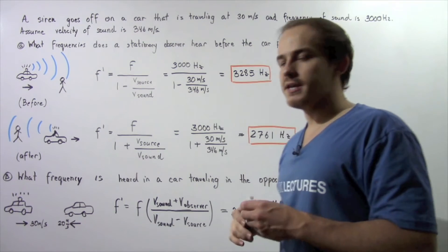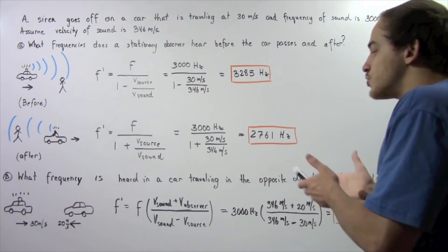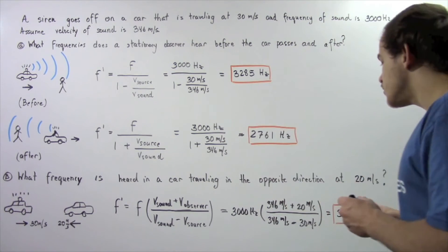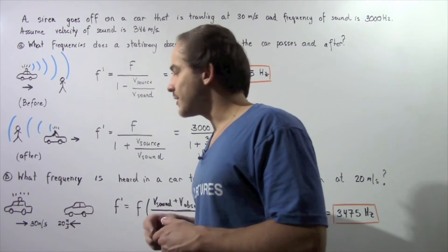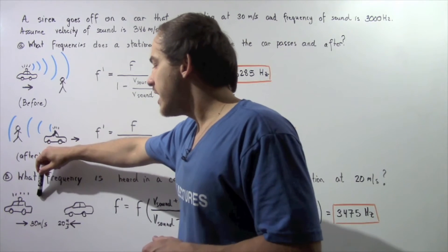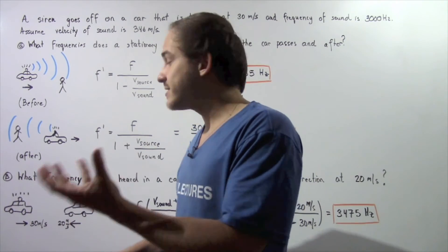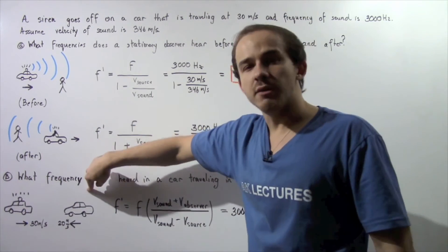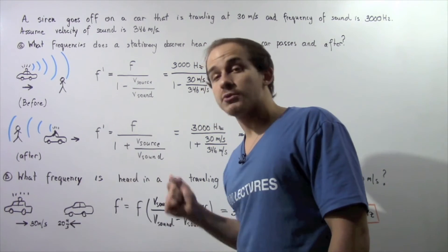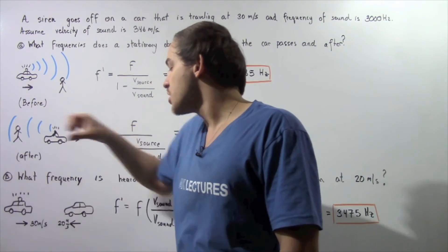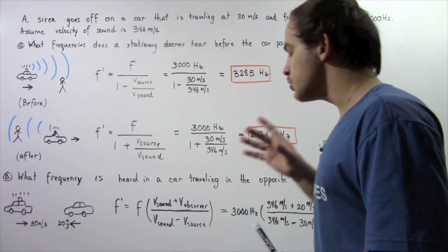Let's move on to part B. What frequency is heard in a second car traveling toward the first car at a velocity of 20 meters per second? Car number 1 is traveling at 30 meters per second creating the sound, toward car number 2, the observer. Car number 2 is traveling toward the source, car number 1, at 20 meters per second.